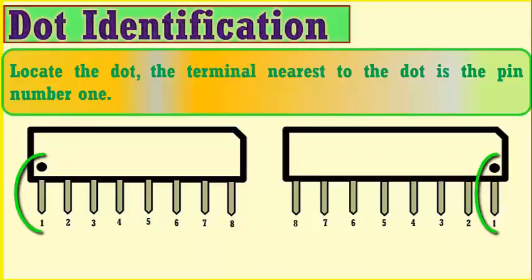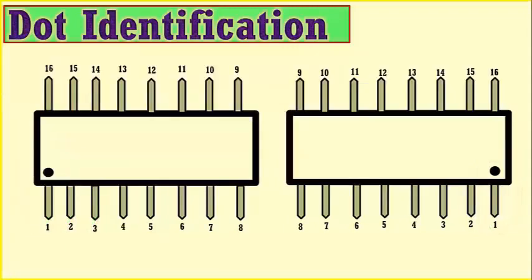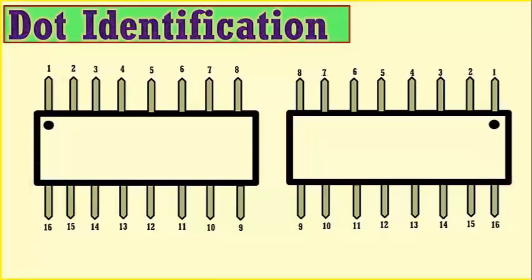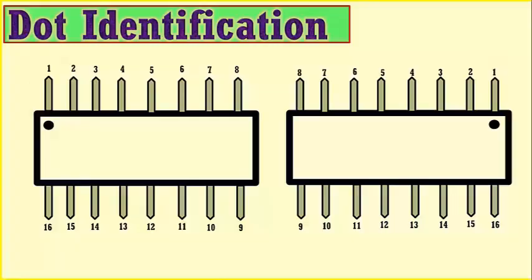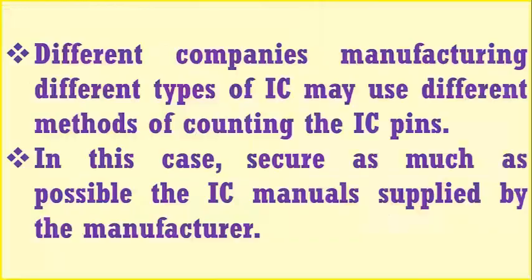Here are examples of the dot identification. Different companies manufacturing different types of IC may use different methods of counting the IC pins. In this case, secure as much as possible the IC manual supplied by the manufacturer.